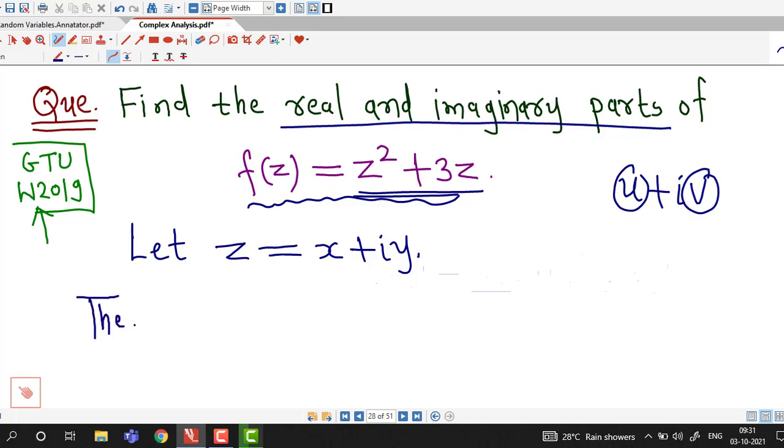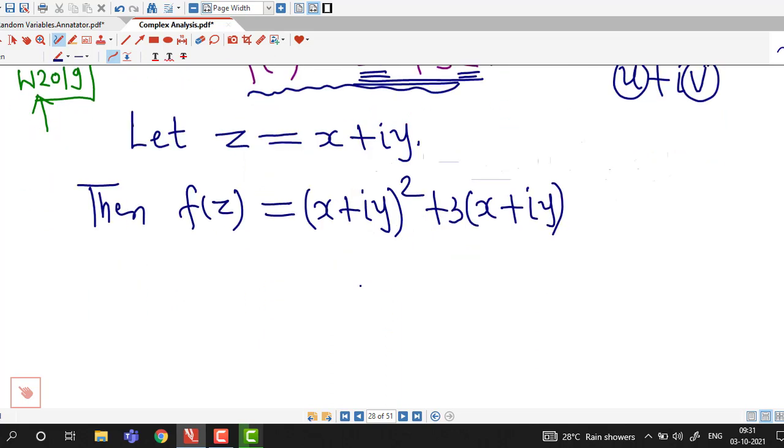So we consider f of z. We put z equal to x plus i y here and here. So it is square of x plus i y plus 3 times x plus i y, and we simplify this.